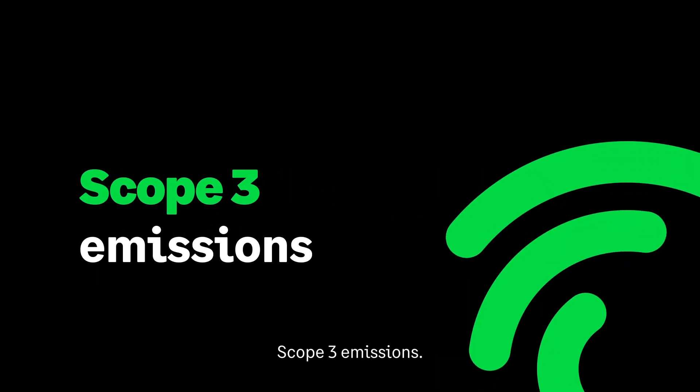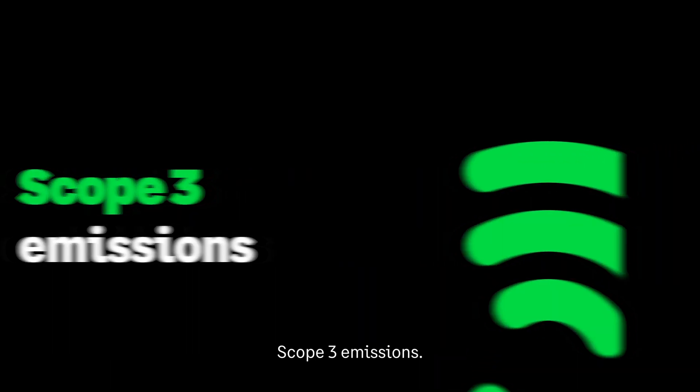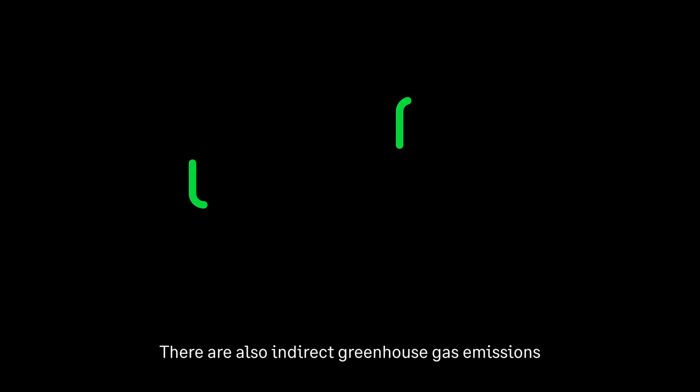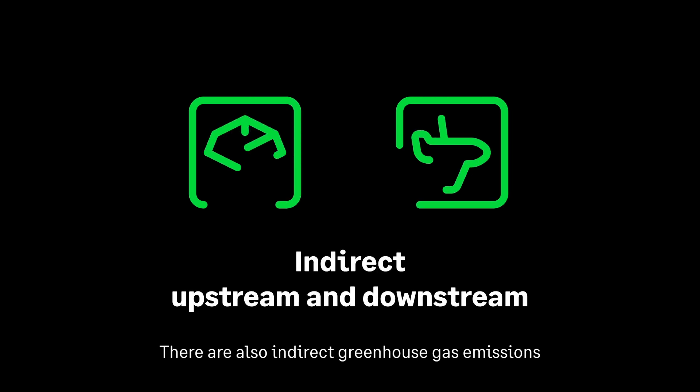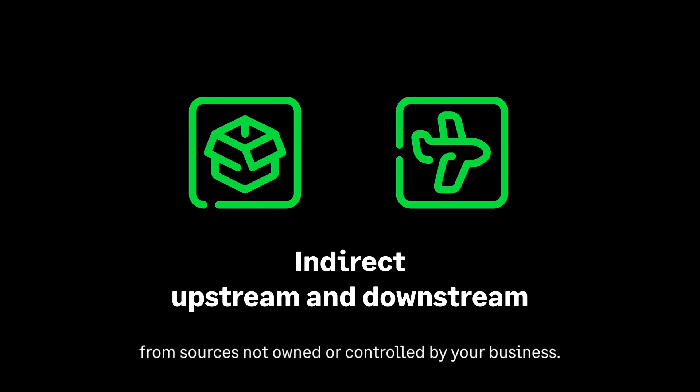Scope 3 Emissions: these are also indirect greenhouse gas emissions that result from activities associated with your business's value chain, from sources not owned or controlled by your business.